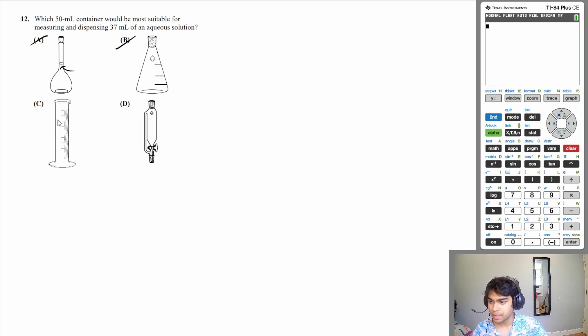C is a graduated cylinder. Graduated cylinders are great for measuring and dispensing liquid because they have a lot of markings. So you could imagine filling up to 50 ml and then dispensing only some of that. So C is a good candidate.